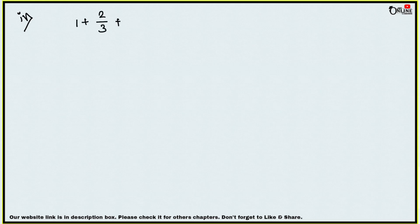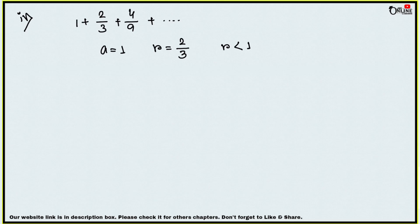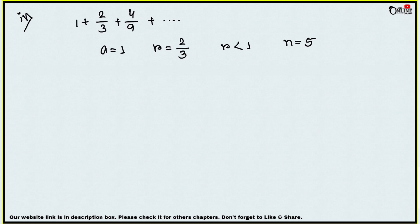Sum number 4 (Roman numeral i): find the sum of n terms and 5 terms of the series 1 + 2/3 + 4/9 + ... Here a = 1, r = 2/3, n = 5. Since r < 1, we use the formula Sn = a(1 − rⁿ)/(1 − r). We need to find both Sn (for n terms) and S₅ (for 5 terms).